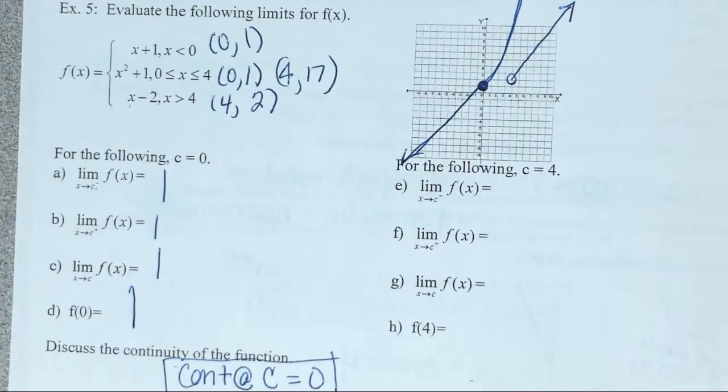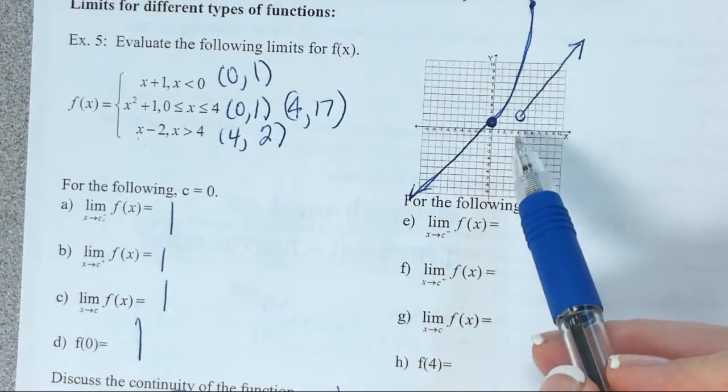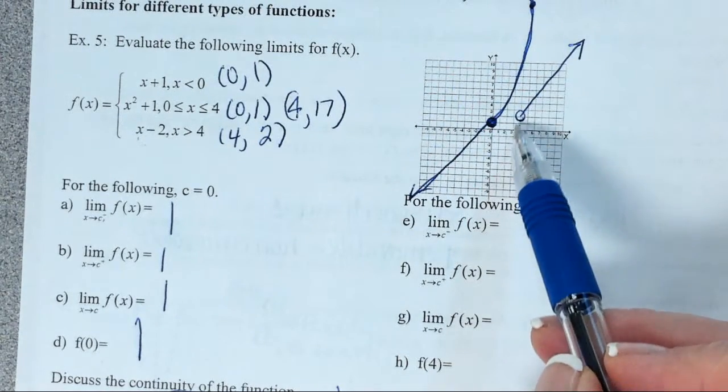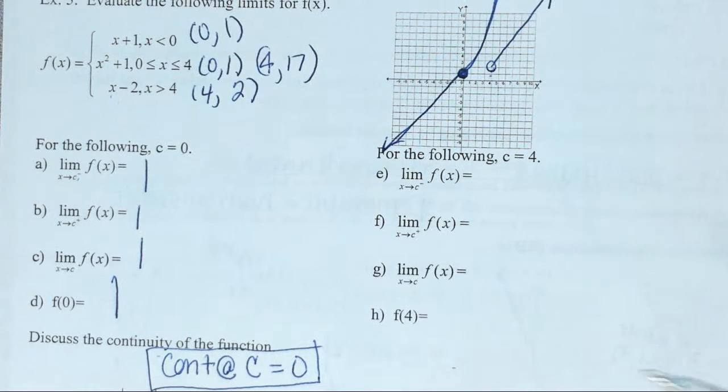Okay. Now we're looking at a different part of the graph. Now we're looking at when C equals four. So now that's right here, when X equals four or C equals four. So I want you to try to answer these four on your own and then check them with your group. See if you all agree.